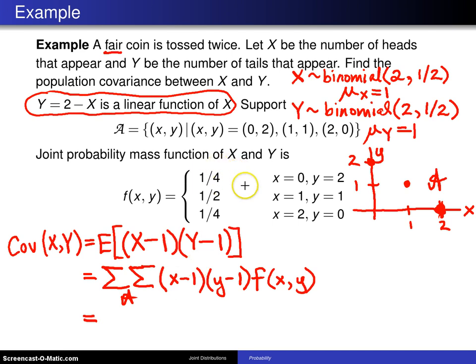We have three different values that we need to compute this quantity over. This top line here will be the first one that we do. So when we plug in X equals 0 and Y equals 2, we get (0 minus 1), which is negative 1, and (2 minus 1), which is positive 1, multiplied by f(0, 2), which is 1/4. So in this case, we get negative 1 times positive 1 times 1/4, which is negative 1/4.